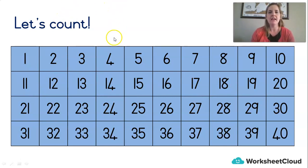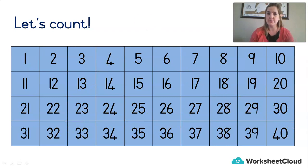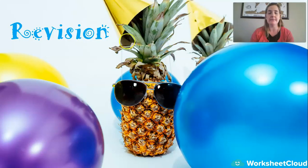Let's count in fours: 4, 8, 12, 16, 20, 24, 28, 32, 36, 40. That's quite a tricky one. If you're a bit rusty, then when this video is over, I want you to go back and practice counting in threes and counting in fours. When you've got all these maths basics in your brain, when you get to bigger maths, you'll find it all comes so much easier.